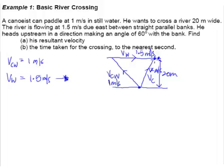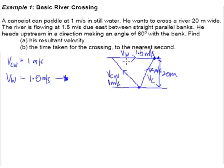Every time you draw a triangle and label it, make sure the logic makes sense: you aim here, river flows here, you end up here — yes, that makes sense. Now you have to find an angle inside the triangle. This is very, very important because without the angle inside the triangle, you are basically running blind. You can't solve for any sides or angles at all.